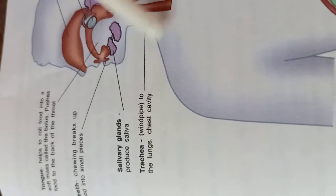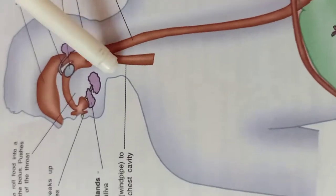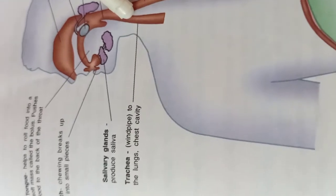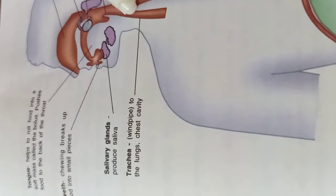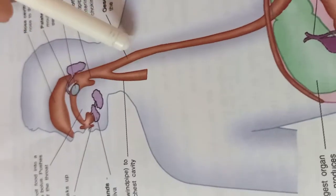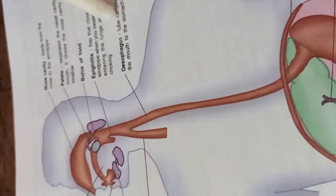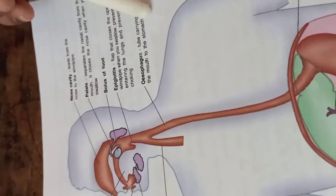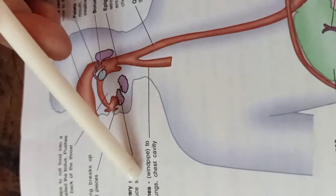The esophagus, also referred to as the food pipe or windpipe in the diagram, is responsible for carrying food from the mouth to the stomach. The trachea is the windpipe through which we breathe in and out.